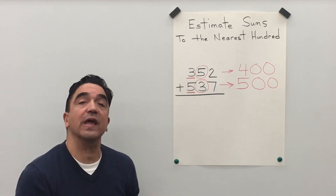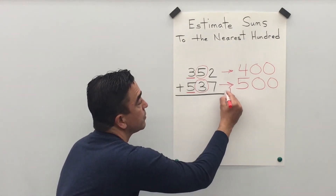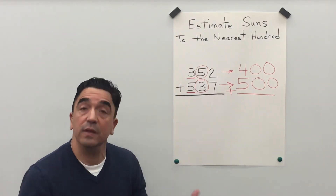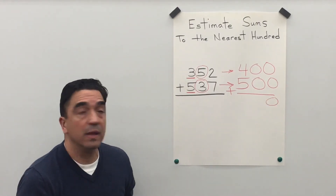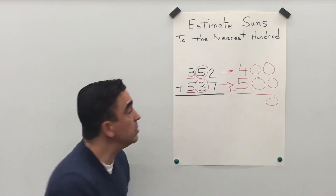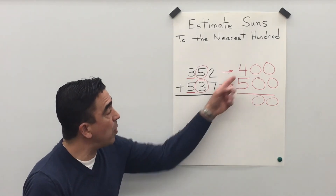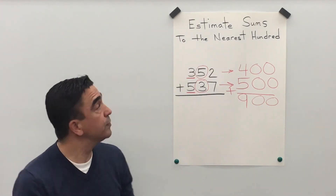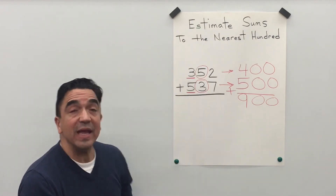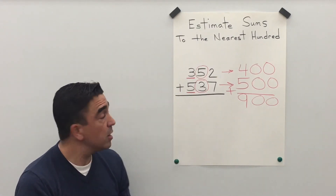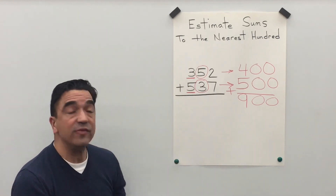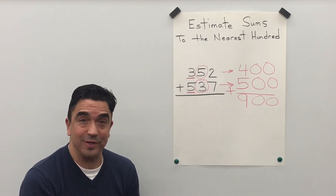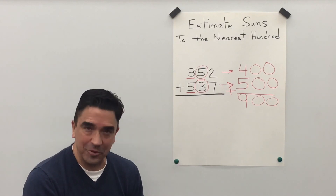Now is the second step in the process — we are going to add. 0 plus 0 is 0, 0 plus 0 is 0, 4 plus 5 is 9. So when we estimate sums to the nearest hundred, 352 plus 537 gives us a sum of 900. And that concludes our lesson.